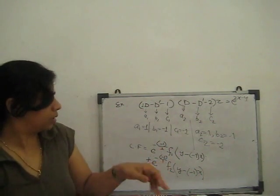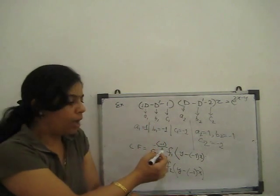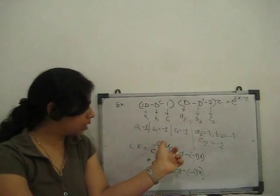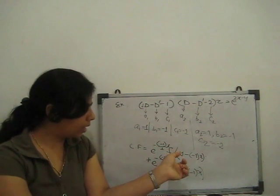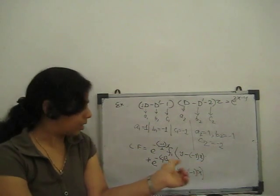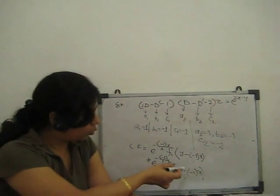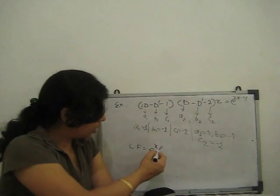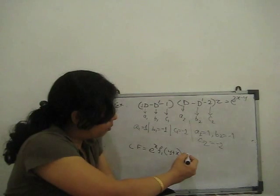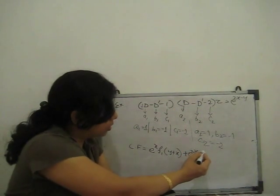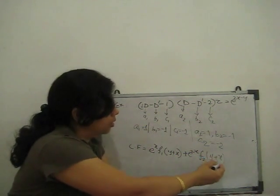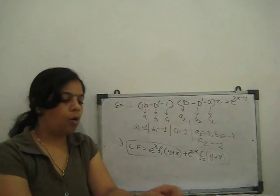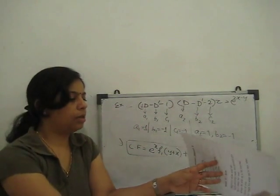Rewriting, the complementary function is: e to the power x · f1(y + x) + e to the power 2x · f2(y + x). This is the complementary function for the given equation. Now for the particular integral: we replace D with 2 and D' with the coefficient −1 (from the exponent 2x − y).